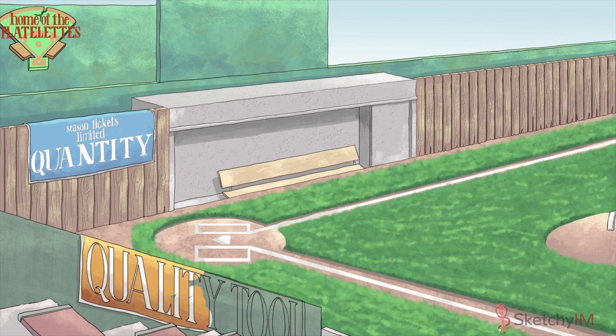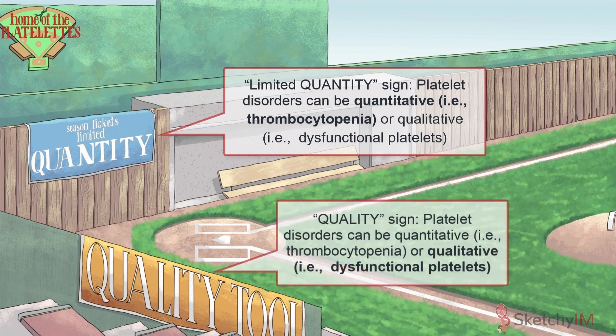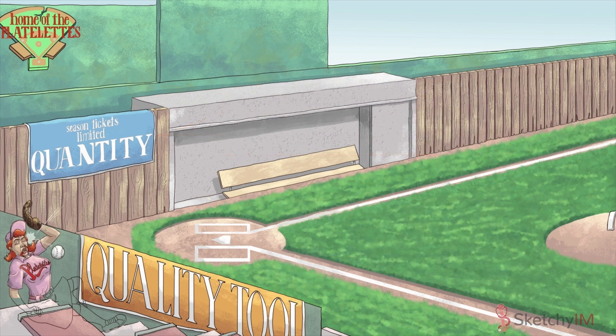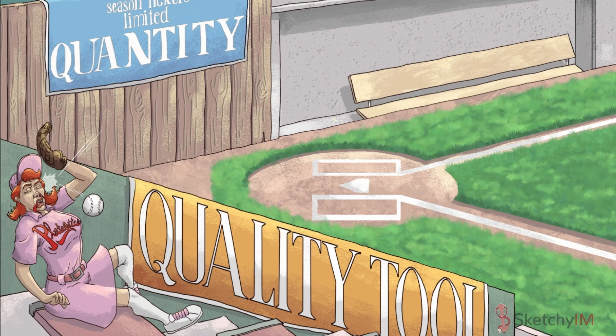We'll first cover the general findings common to most platelet disorders, followed by a more in-depth discussion of the specific conditions you'll need to know. Platelet disorders can be broadly divided into two categories: those characterized by a quantitative defect — that is, low numbers of platelets — and those characterized by a qualitative defect, aka dysfunctional platelets. Let's discuss some of the general symptoms and signs you'll see in most platelet disorders, spending some time with this unfortunate superfan over by the home team's dugout.